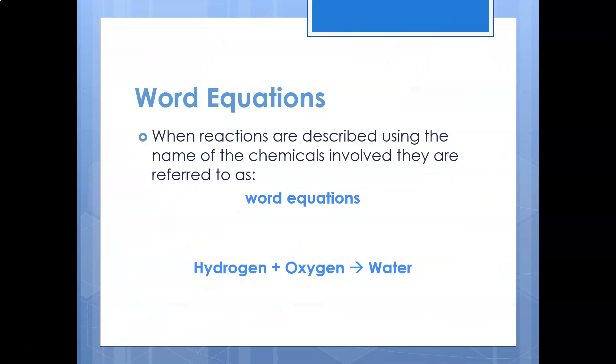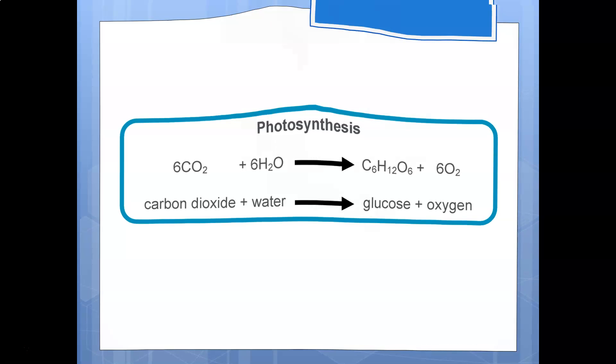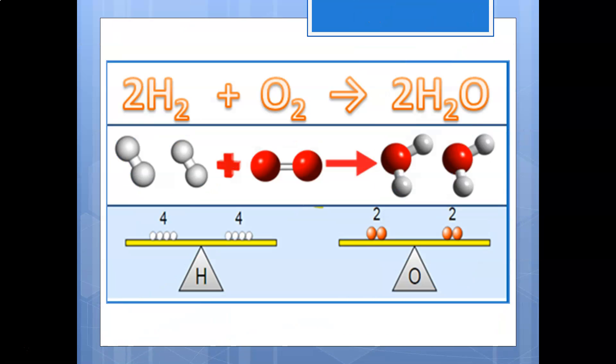We've looked at those word equations, using the words but still having the arrow and the plus. Here we've got two examples: we've got our word equation and our chemical equation. So this is photosynthesis. You can see the word equation on the bottom, chemical equation on the top and that's a nice balanced chemical equation there. We'll look at balancing equations in the next video so don't worry about that at the moment.